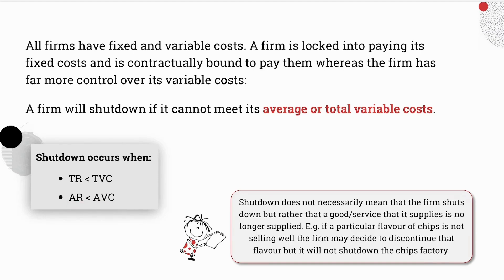At this stage Matrix I would like to draw your attention to the following. Shutdown does not necessarily mean that the firm shuts down but rather that a particular good or service that it supplies is no longer feasible. For example, if a particular chip factory produces a range of flavors but the flavor chakalaka has not proven popular with consumers, the firm will then decide to discontinue that particular flavor of chips but it will not shut down the chip factory.